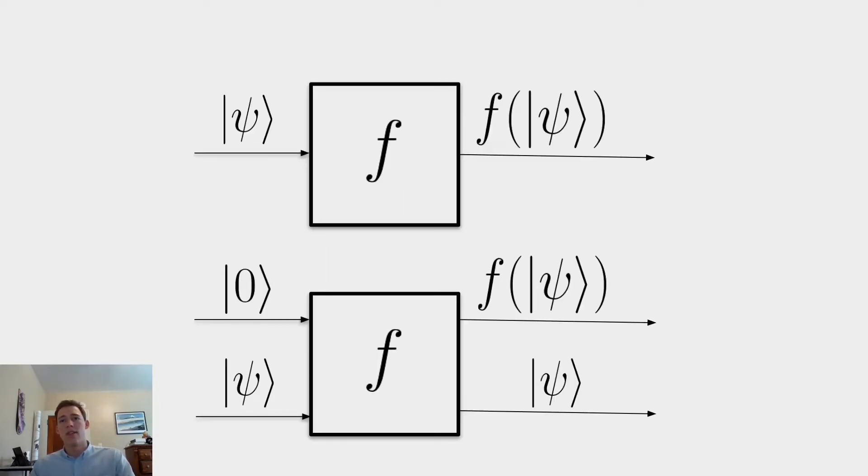So we reformulate our f as this, where we have an input qubit in the state zero, that is going to have the result of applying f to the state psi mapped onto it. And then we will also just return the state psi. This way, our operation is always going to be reversible, and can now be implemented on a quantum computer.